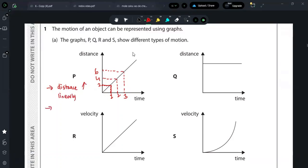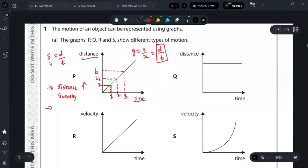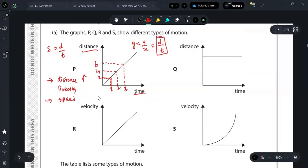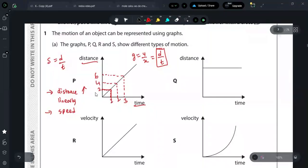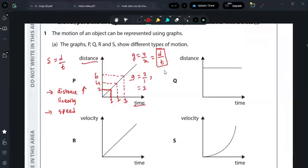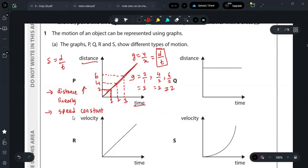Now secondly, coming to the gradient. Gradient formula is y over x. Our y-axis is distance, x-axis we have time. Distance over time gives us the formula for speed. Speed equals distance divided by time, which means finding gradient of this graph will give me speed. Let's find the gradient. For the first one, gradient will be 2 divided by 1, which is 2. Second one, 4 divided by 2, which is also 2. Third one, 6 divided by 3, which is also 2. Which means my gradient will be constant. I will have a constant gradient, which means speed will be constant as well. Speed is constant. Analysis is done.